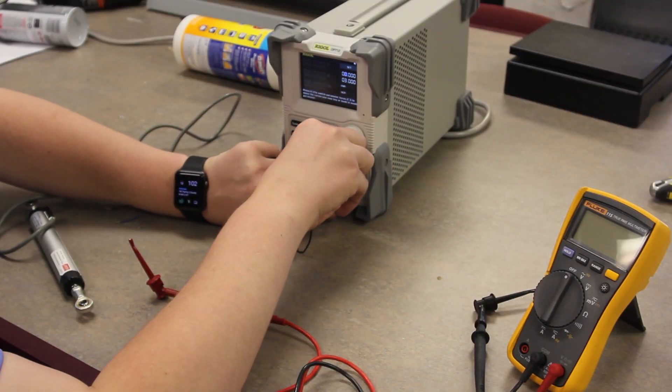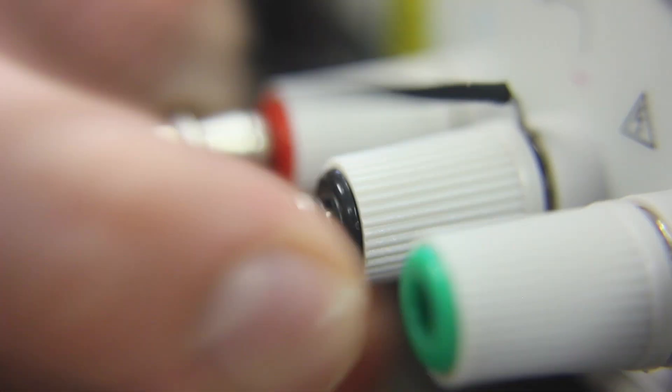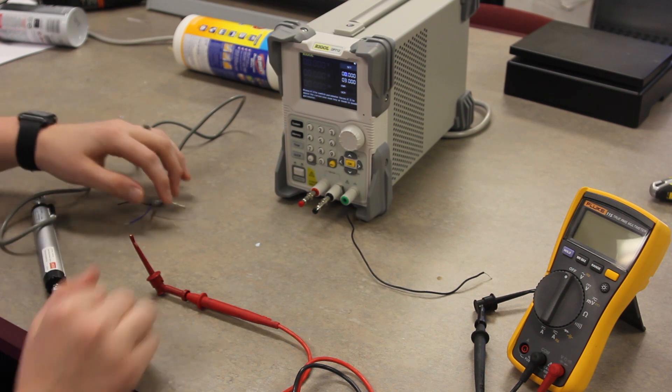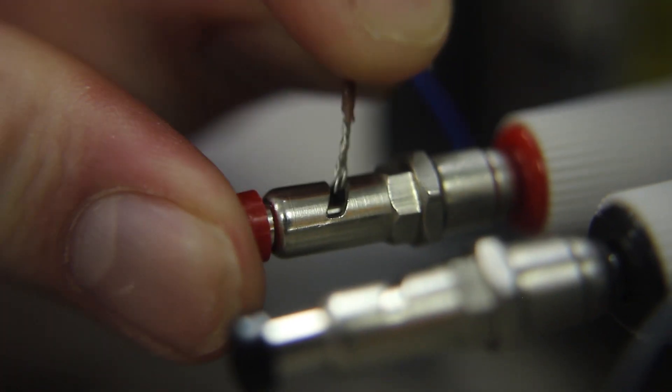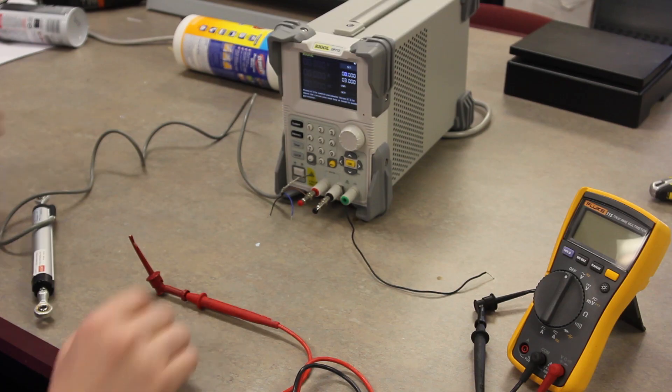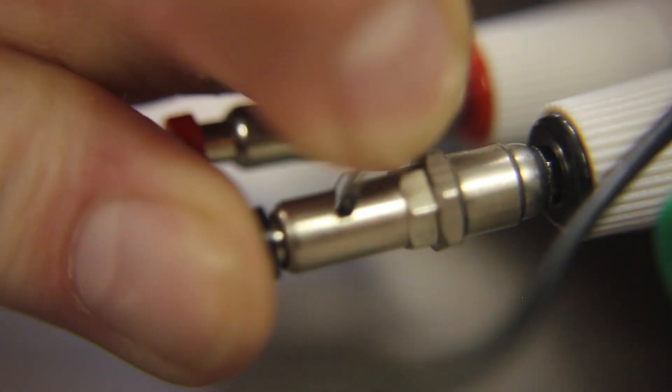Begin by attaching the jumper wire to the negative terminal of the power supply. Next, attach the sensor's positive excitation wire to the positive terminal of the power supply. Then, attach the sensor's negative excitation wire to the negative terminal of the power supply.